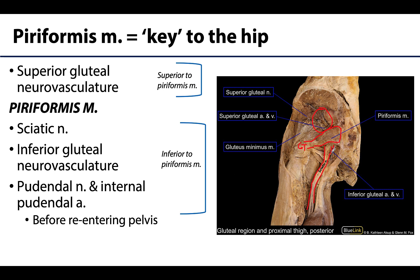Right next to the sciatic nerve, you can see the inferior gluteal neurovasculature will also exit inferior to the piriformis and travel as a unit. Typically in this type of dissection it has been cut because the gluteus maximus has been reflected or removed, which makes sense since that is what it supplies. Additionally, not visible in this image, will be the pudendal nerve and internal pudendal artery, which also exit the greater sciatic foramen inferior to the piriformis before almost immediately recurring backwards towards the pelvis to innervate the perineum.